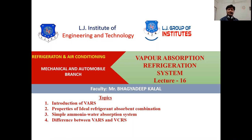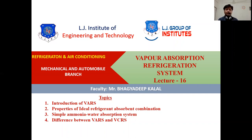Before this lecture, we already studied the VCRS cycle — Vapor Compression Refrigeration System — and the Vail-Coleman Refrigeration System, which is used as a layer in the Vail-Coleman cycle. In VARS today, I will discuss topics like the introduction of VARS, properties of ideal refrigerant and absorbent combination, simple ammonia-water absorption system, and the difference between VARS and VCRS.